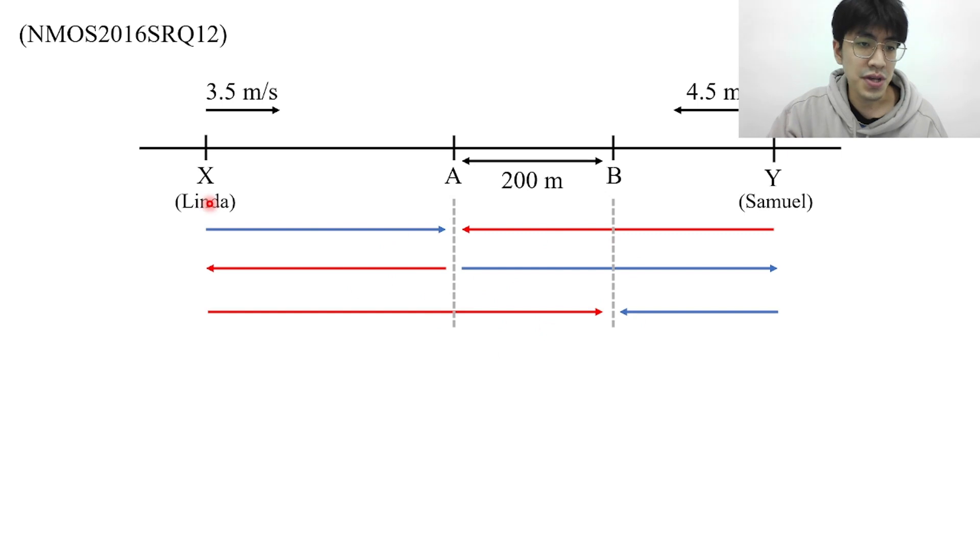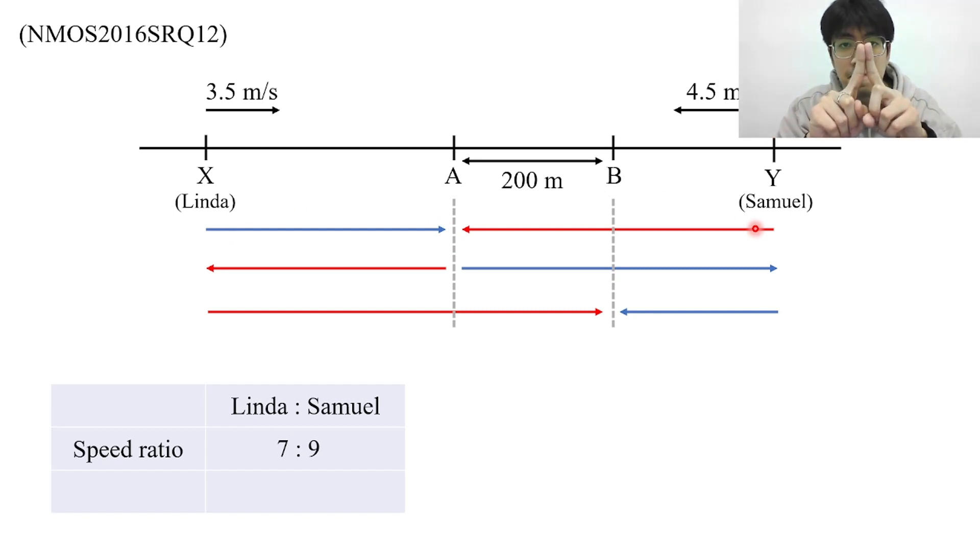The question tells us that the speed of Linda is 3.5 and the speed of Samuel is 4.5. We can find out that the speed ratio between Linda and Samuel will be 3.5 to 4.5. If you don't like to work with decimals we can turn this into 7 to 9 which is the same. When they meet for the first time at point A, since they started at the same time it will take them the same amount of time to reach point A. Under the same amount of time if the speed ratio is 7 to 9 then the distance ratio will also be 7 to 9. If you're faster then you can move a bit further. If you're slower then you travel a little bit shorter. Therefore under the same amount of time the speed ratio is equal to the distance ratio.